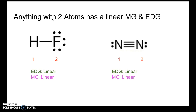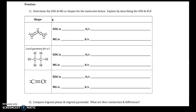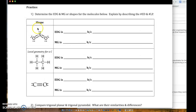So if you have something with two atoms, electron domain geometry and molecular geometry will always be linear. Now it's time to practice — do problems one through four in part three of the unit four day three packet. Check your answers and correct your mistakes, because the more you practice the better you get. That's it for this video — hope you found it helpful, have a quality day.